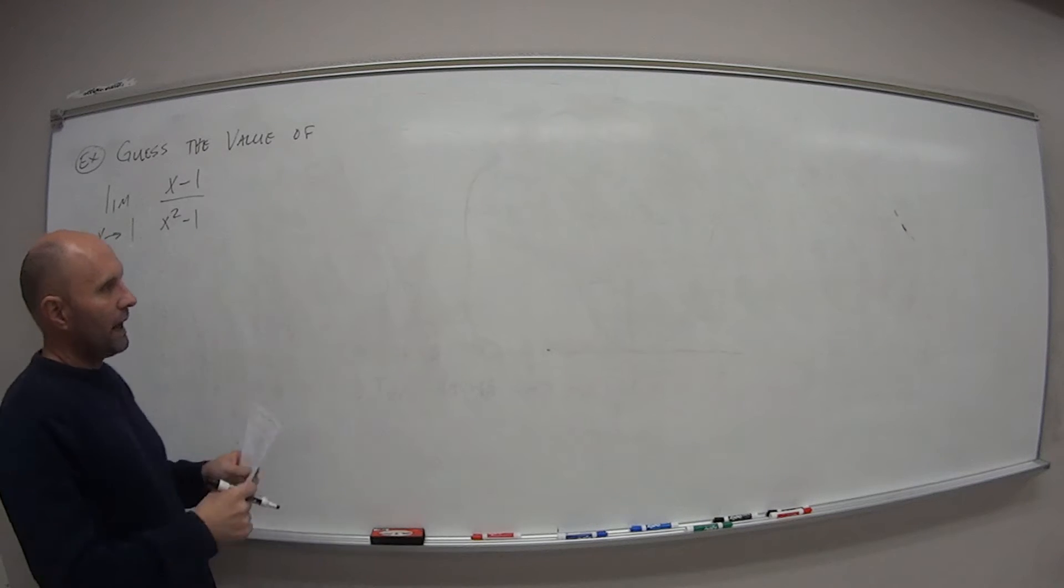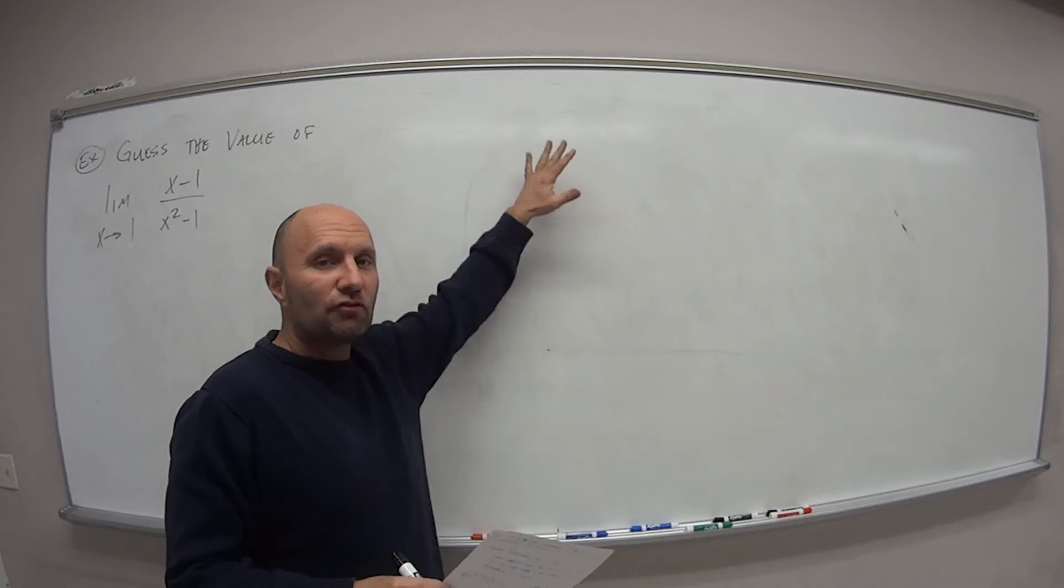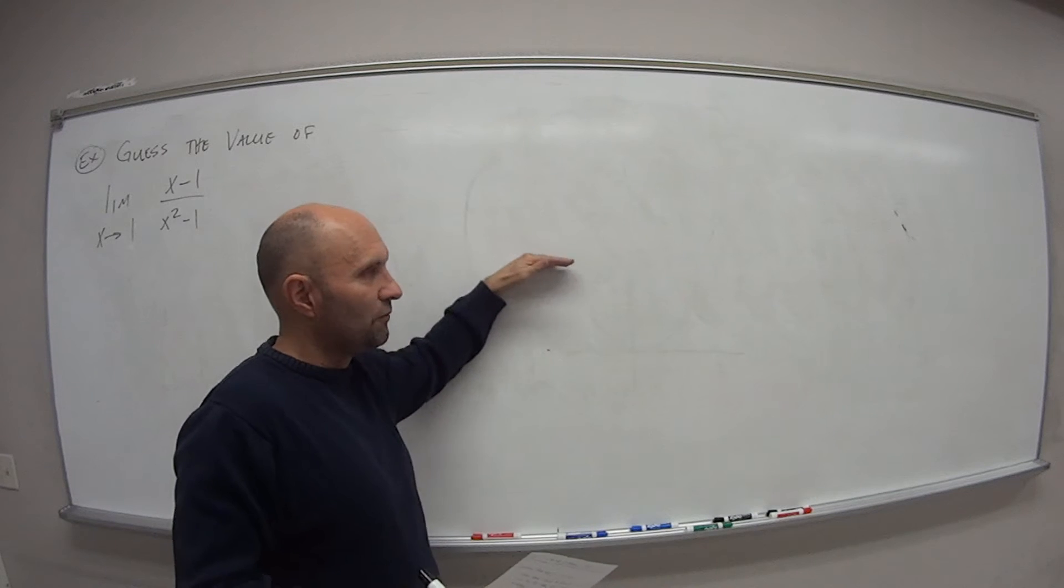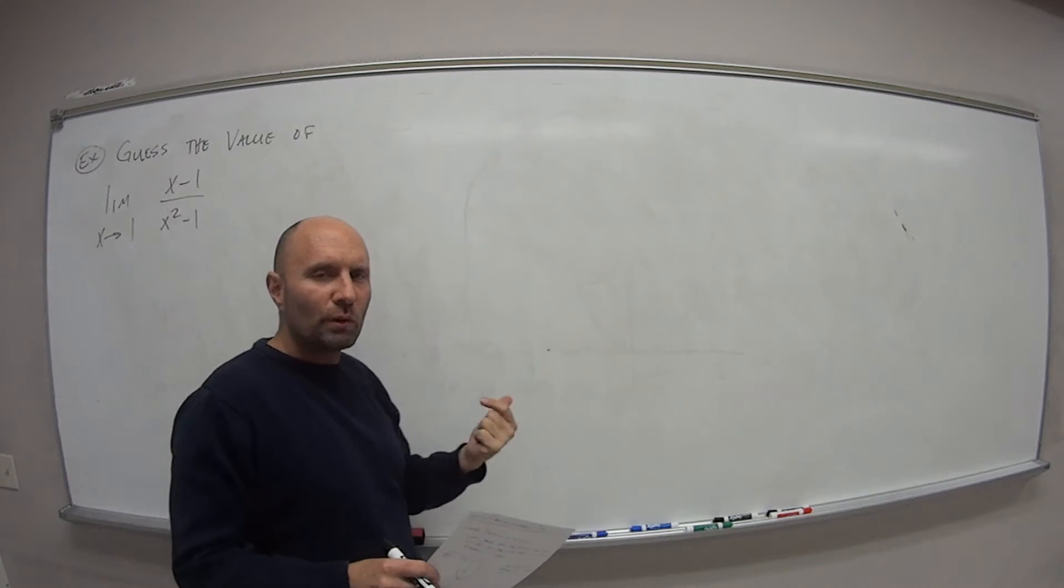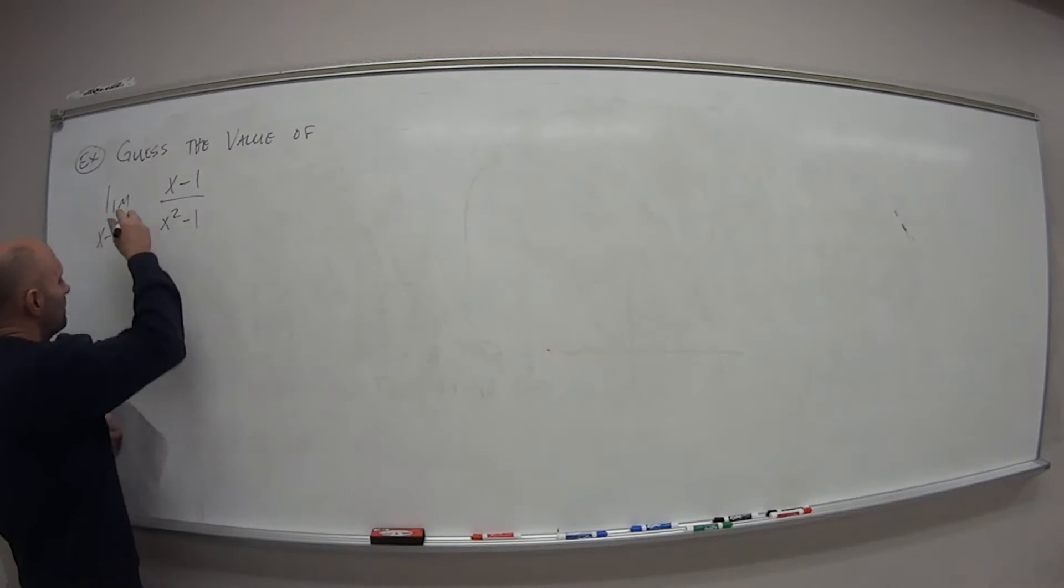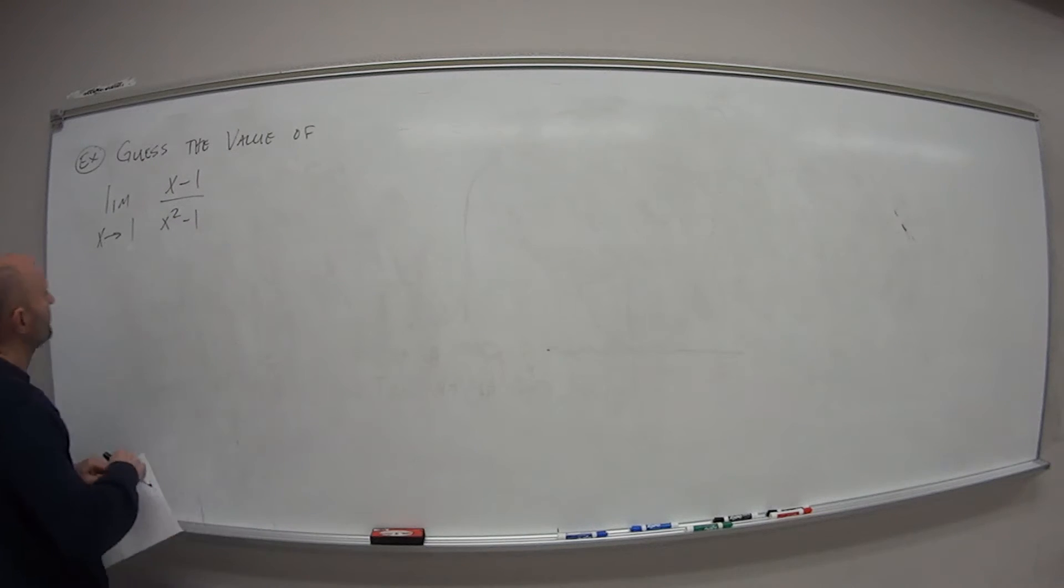But remember, when I had, excuse me, that graph of x squared, what did we do? We came from the left side, we came from the right side. So we're going to do the same thing here, but with our value of 1. So if I build this table,